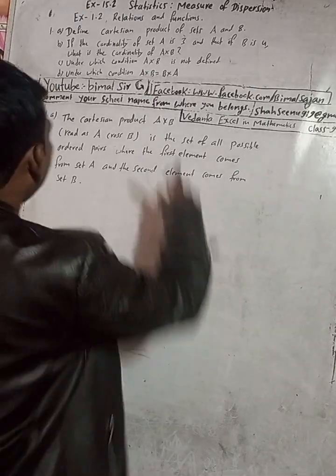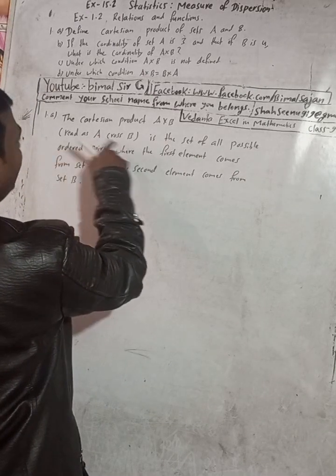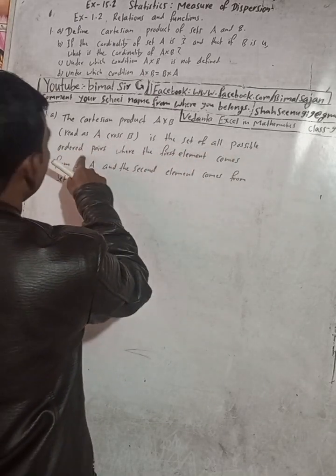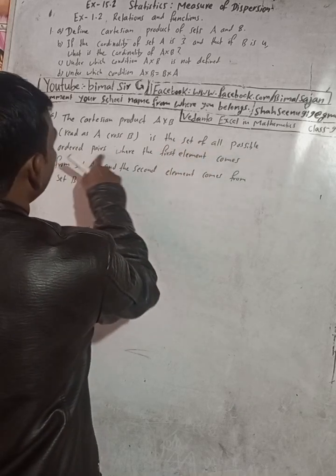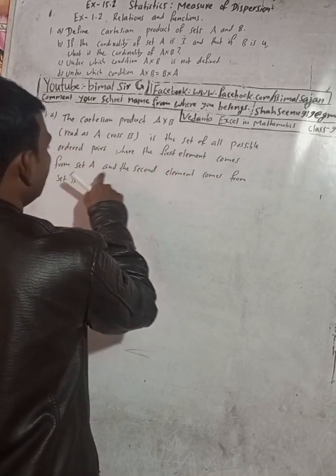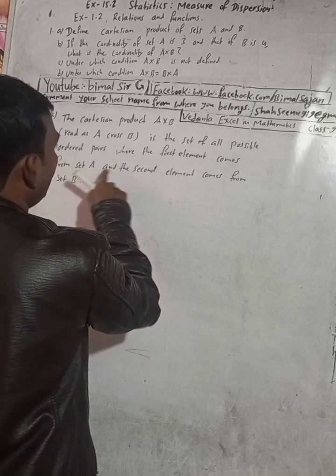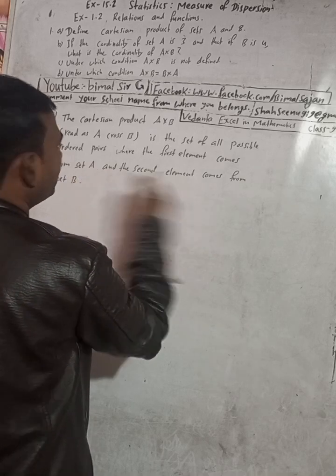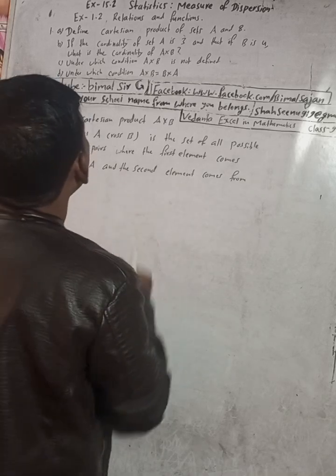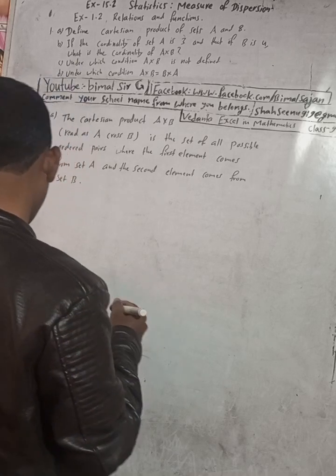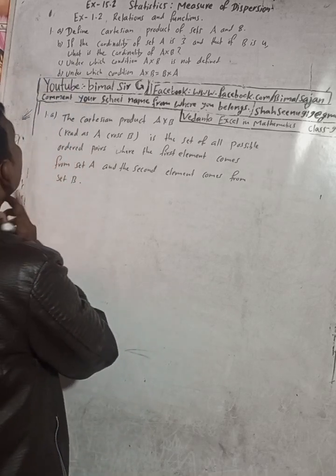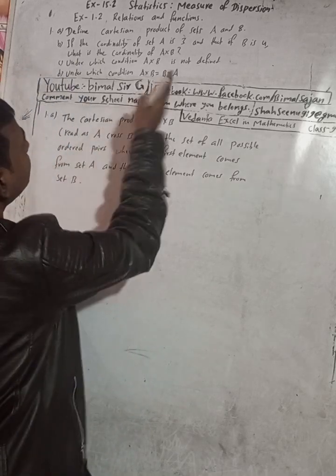The Cartesian product A cross B, read as A cross B, is the set of all possible ordered pairs where the first element comes from set A and the second element comes from set B. This is the definition of Cartesian product.